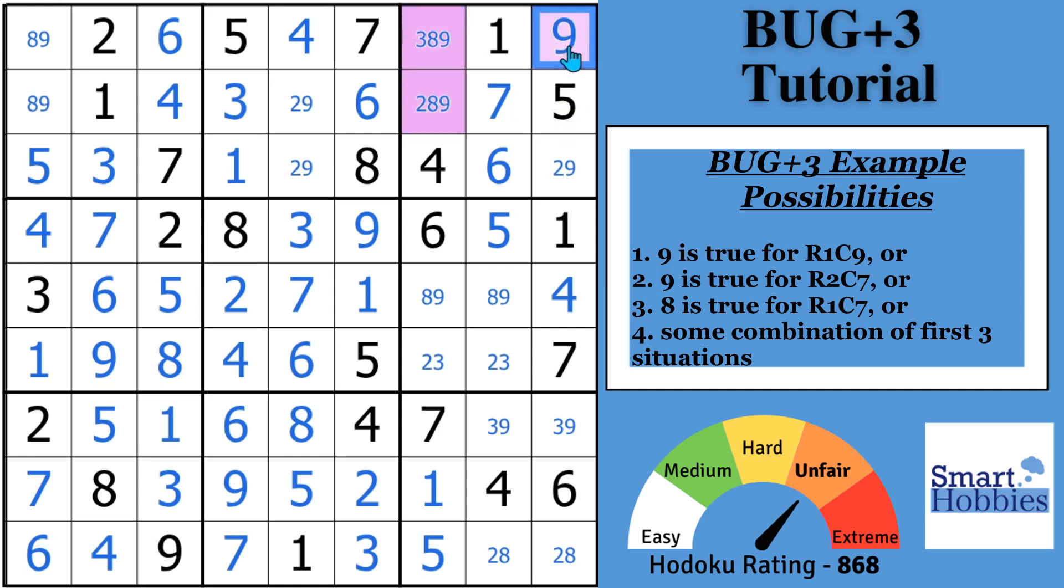First situation. This could be a 9. If that's a 9, then this cell right here cannot be a 9. It's going to be a 2. And this is going to be the focus cell, because it's the cell that shares the block with the rest of these BUG+3 cells. If that is not a 9, we go over here, and in this cell, that could be a 9. That's a second possibility. This is a 9, and then this green cell would not be a 9. That'd have to be a 2 there as well.